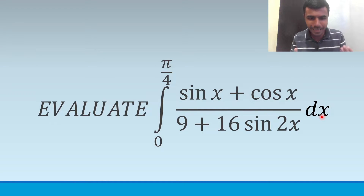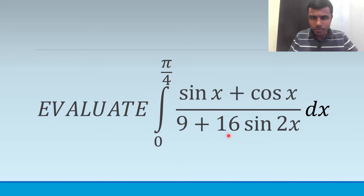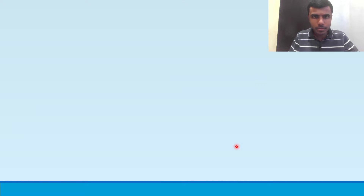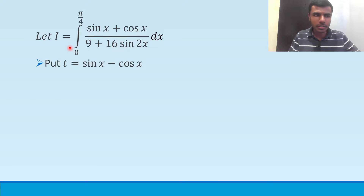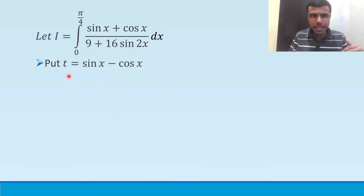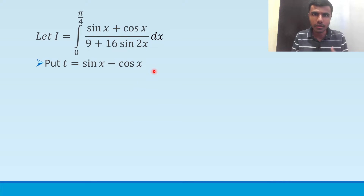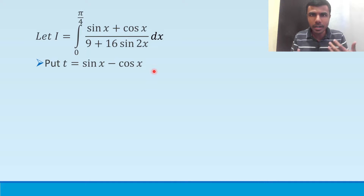For this we need a special substitution. First I took the given integral as I. We need to take t as sin x minus cos x. Now how I got this idea — I feel it would be better if I just explain the solution rather than going into details.